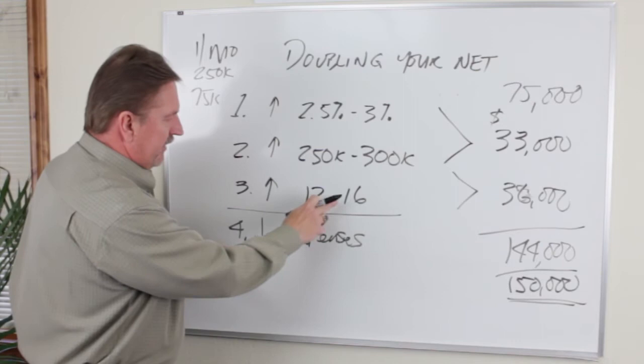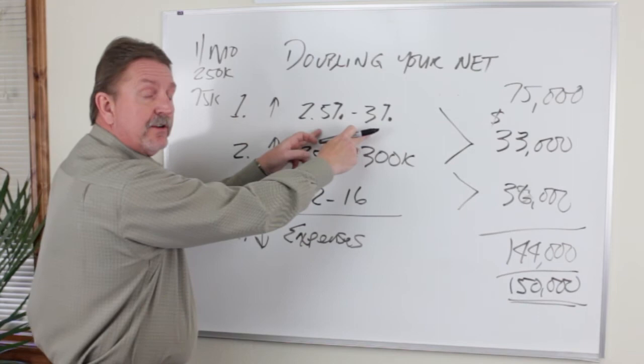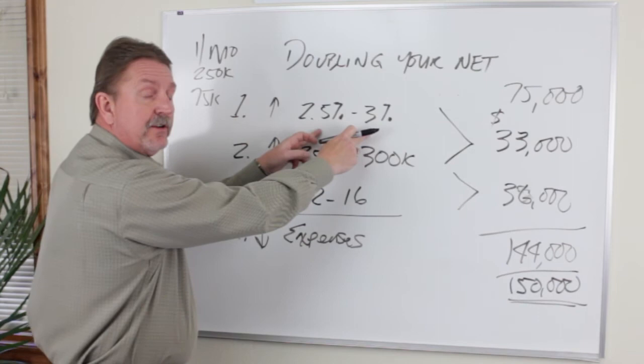All you did was four more transactions. Are you going to have any more expenses at 16 transactions versus 12? Probably not. Are you worth 3%? Should you be getting it? You betcha. Can you increase your sales price? Yes, just 20%. I think you can. You double your income.